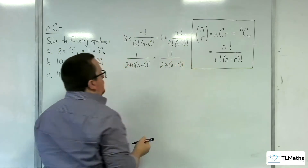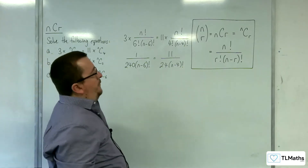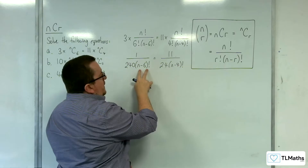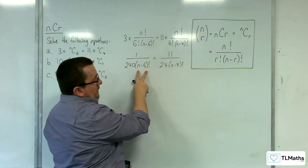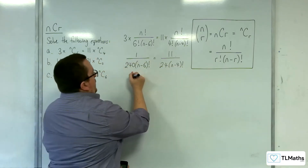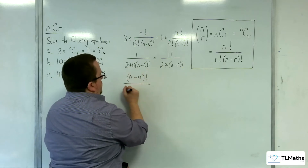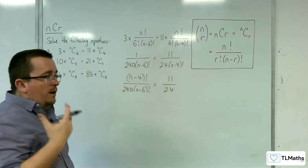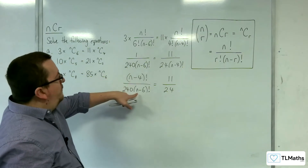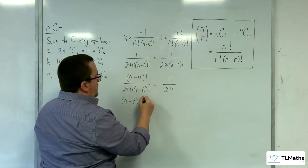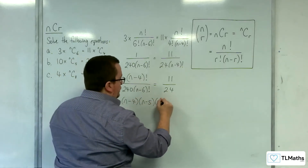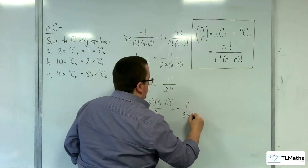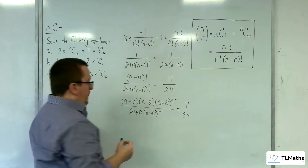To solve this equation, multiply both sides by the larger of the two factorials. Since (n minus 4) factorial is larger than (n minus 6) factorial, we multiply both sides by (n minus 4) factorial. We get (n minus 4) factorial over 240(n minus 6) factorial equals 11 over 24. We know (n minus 4) factorial equals (n minus 4)(n minus 5)(n minus 6) factorial, so the (n minus 6) factorial cancels.